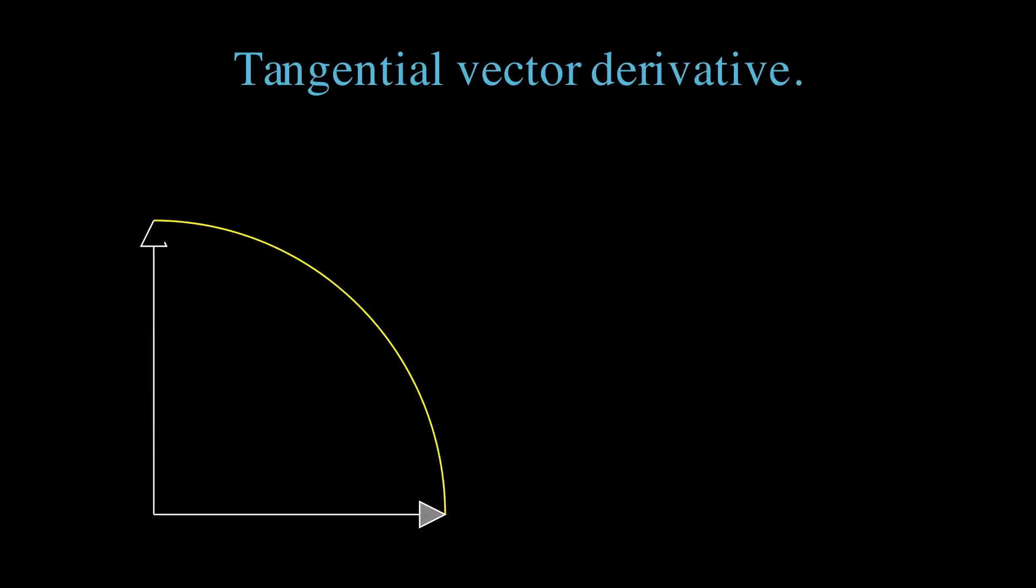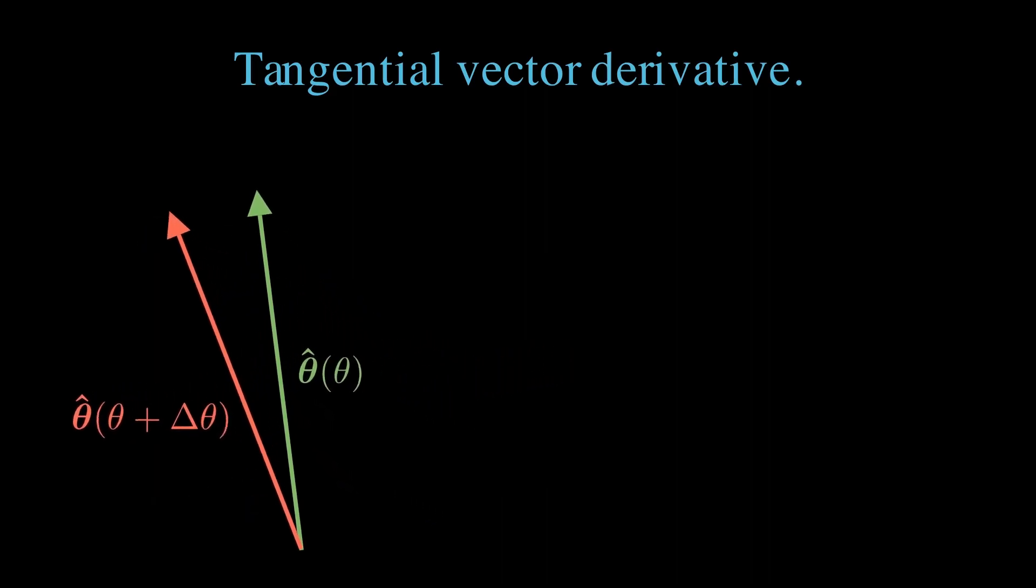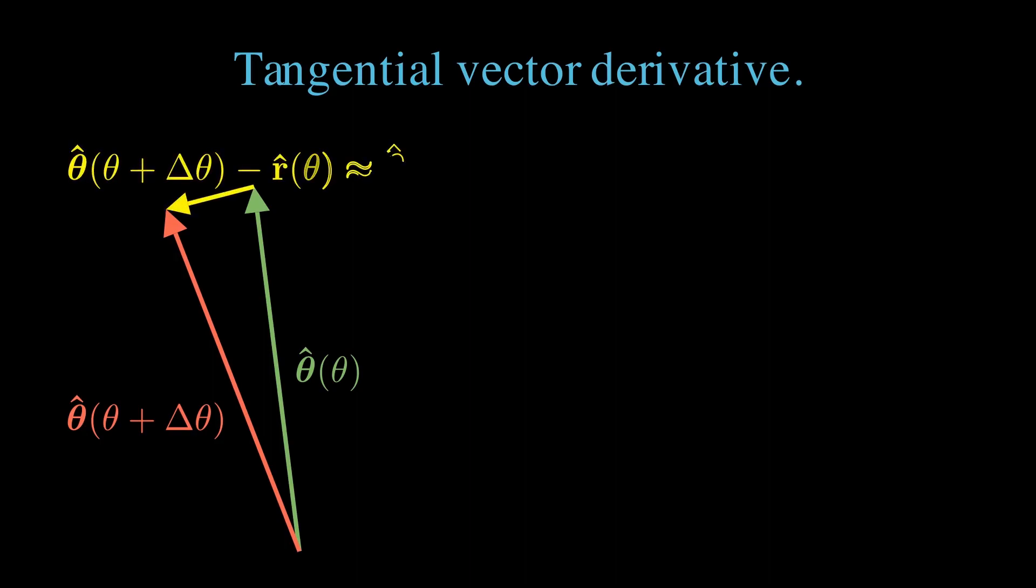Now let's compute the derivative of the tangential unit vector. Imagine this vector at an initial position angled theta, and displace this by an angle delta theta. Let's zoom in on the difference. This time, we see that the difference between the two vectors is inward radial oriented.